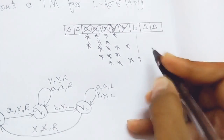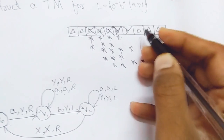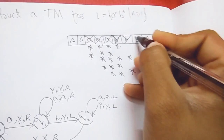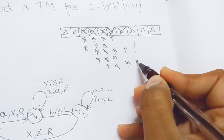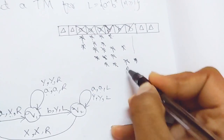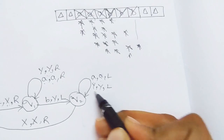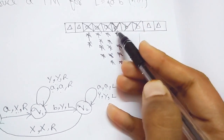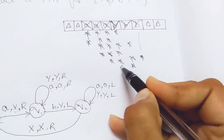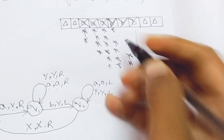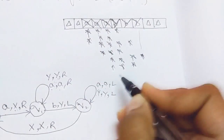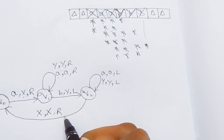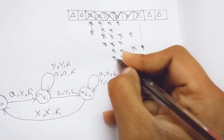The last B is replaced with Y and the header moves left. Moving left: Y is replaced with Y, the header moves left; again Y is replaced with Y and the header moves left. Now the header sees X, so X is replaced with X and the header moves right.